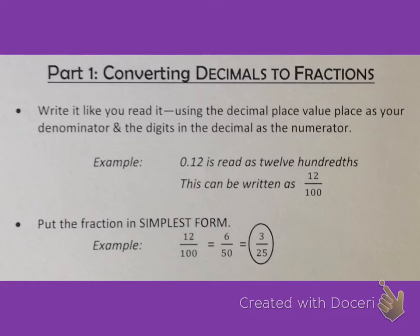Then we put the fraction in simplest form. So we're going to simplify. Well, 12 divided by 2 is 6, and 100 divided by 2 is 50. So we have 6 over 50 or 6 fiftieths. But it can still be simplified further. So we want to get it all the way there. 6 divided by 2 is 3, and 50 divided by 2 is 25. So we have 3 over 25 or 3 twenty-fifths. And that cannot be simplified any further, so it's in its simplest form and we're done with that one.